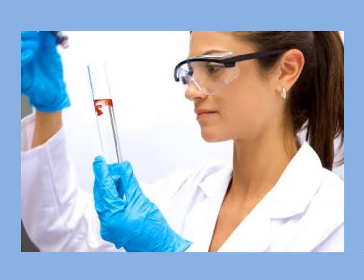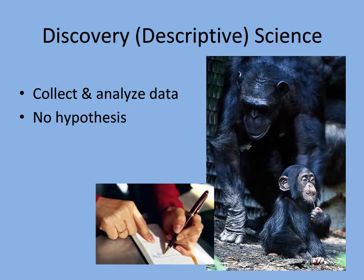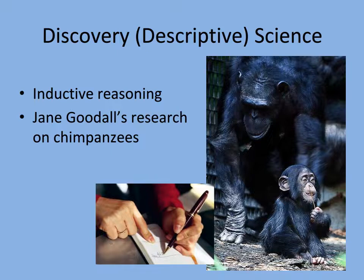In the end, we are trying to learn more about ourselves and the world around us. There are a couple of ways we can do this. We can study science by the discovery method, in which we observe and collect data and later analyze it. We have no initial concept, or hypothesis, that we want to test for. This is a common way researchers study biology in the field. Also called descriptive science, discovery science allows scientists to use inductive reasoning to make conclusions based on observations.